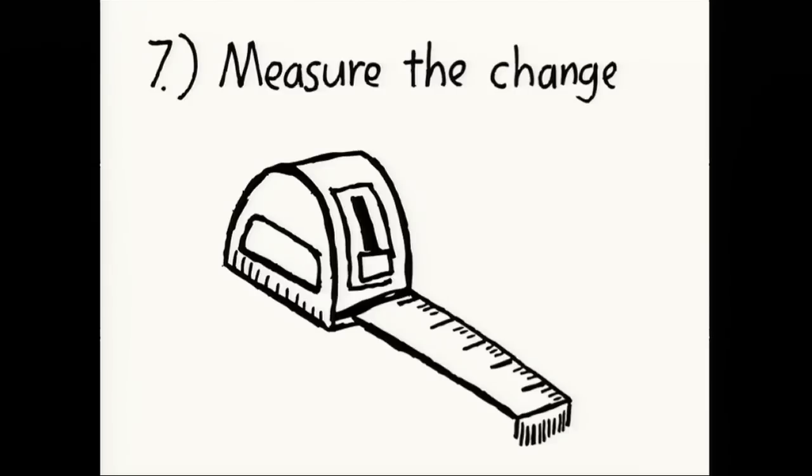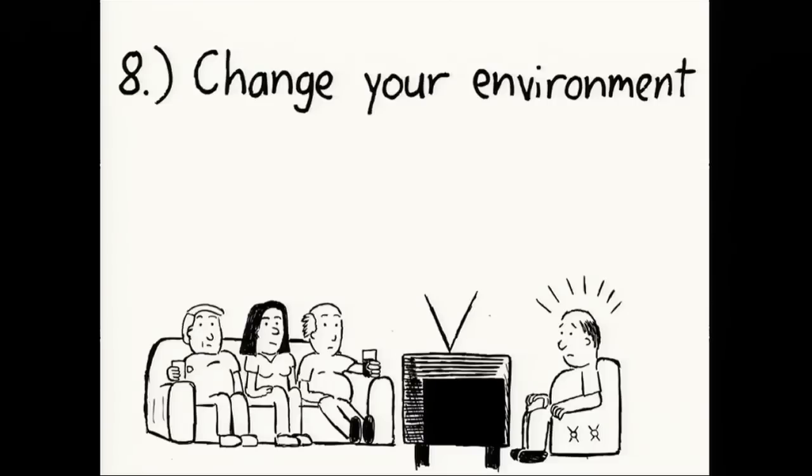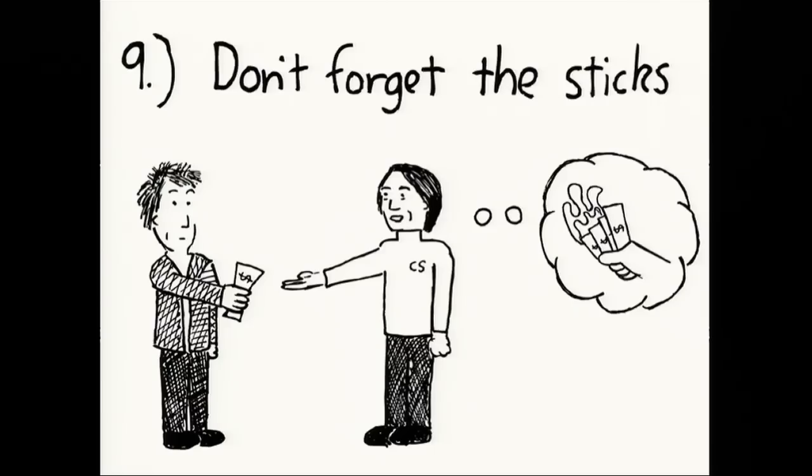The eighth point is probably the most important, and that is to change your environment. And the reason that changing your environment matters is that this is going to be the biggest drag on your ability to change yourself. If three of your best friends are obese, there's a 50% chance that you'll be too. So have a look around you at the impact of your friends and your pantry and your fridge and your commute to work and think about how that affects you positively or negatively.